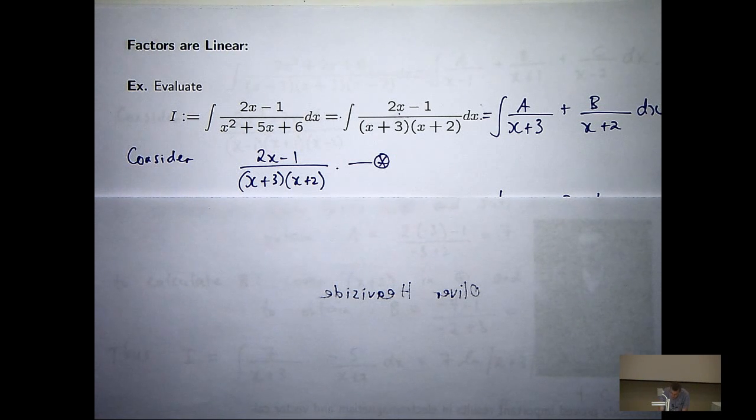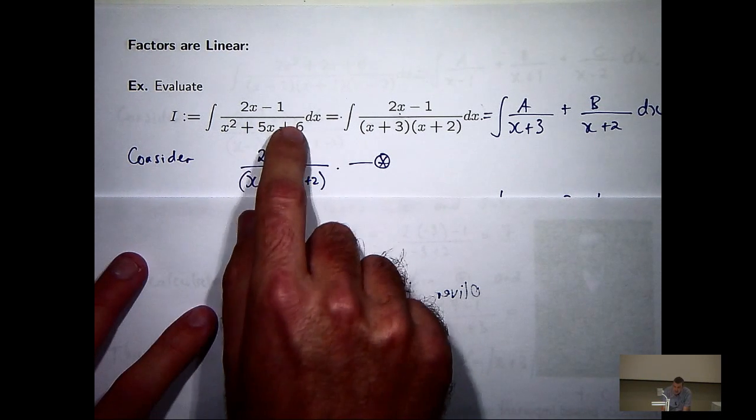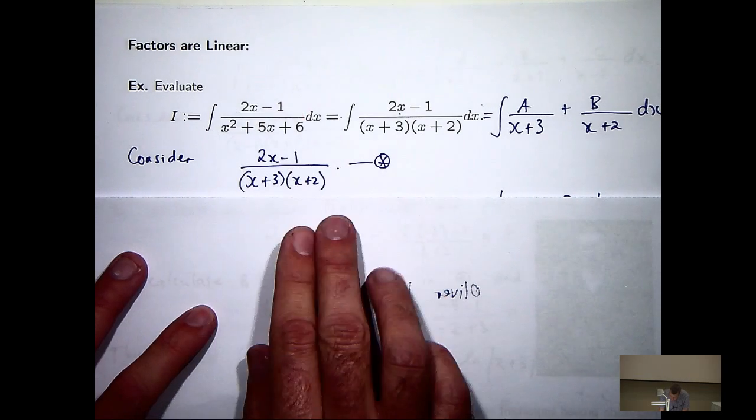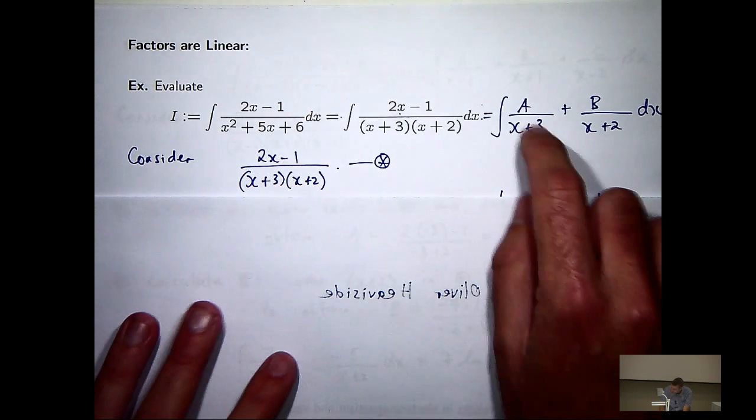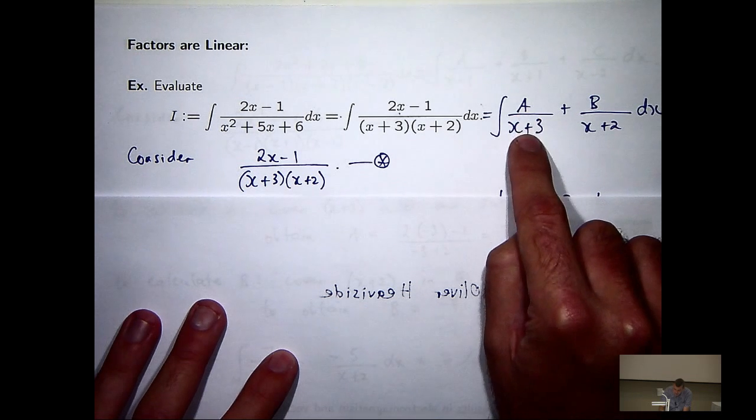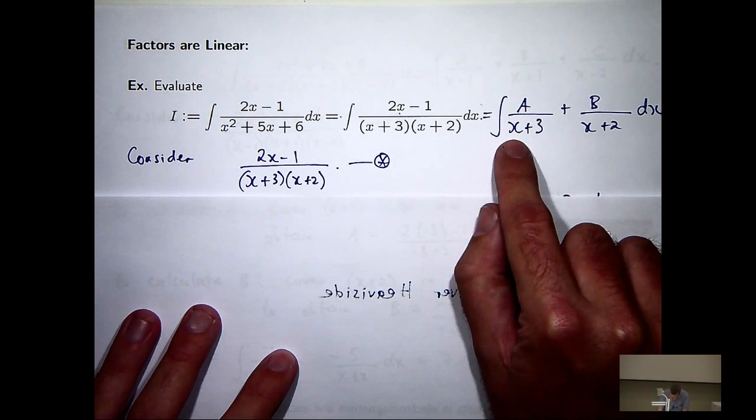OK, so the Heaviside method involves looking at the integrand, covering up one of these, and making a suitable substitution. So if we look over here to find A, A lies above x plus 3.